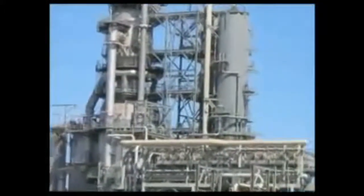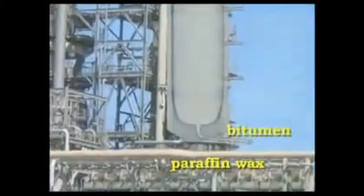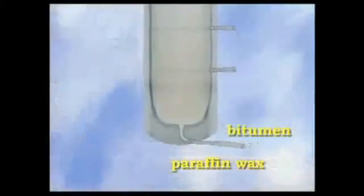Inside the tower, the very long carbon chain liquids such as bitumen and paraffin wax are piped away to be broken down elsewhere.